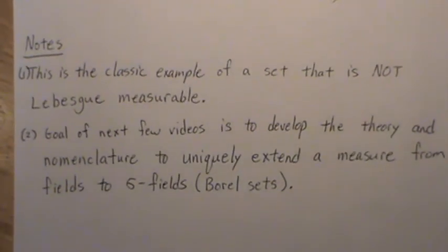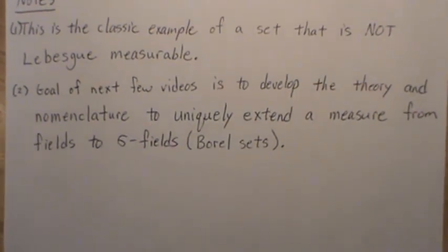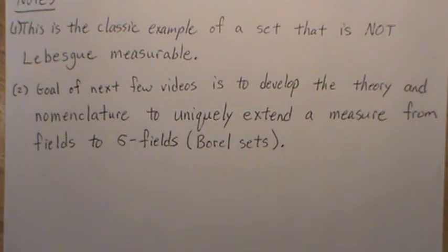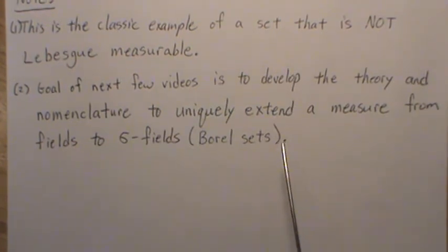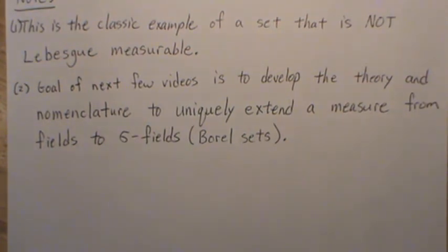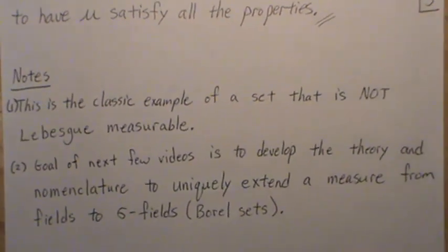Therefore it's not possible to have a measure mu satisfying all four properties simultaneously — it's just not possible. This is the classic example of a non-Lebesgue-measurable set. The goal of the next few videos is to develop a theory and nomenclature to uniquely extend a measure from fields to sigma fields to potentially complete sigma fields — and that sigma field will end up being what's called the Borel sets. It's easy to define a measure on a field, but extending it uniquely to a sigma field is not straightforward, and that's what we'll show.